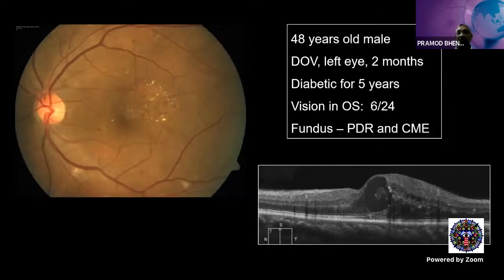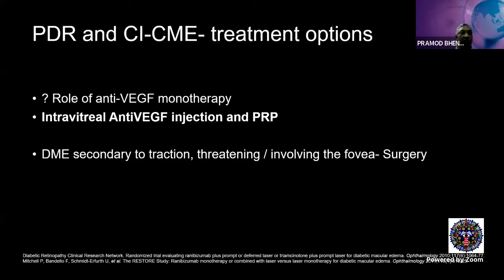For a 48-year-old male with two months of vision loss, five years of diabetes, left eye vision of 6/24, and associated macular edema on OCT — the role of anti-VEGF monotherapy is discussed, but most prefer anti-VEGF for macular edema along with panretinal laser photocoagulation. If OCT shows obvious traction threatening or involving the fovea, surgery is the preferred option.